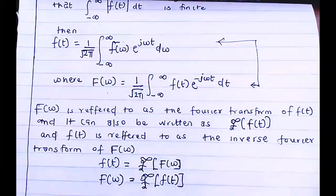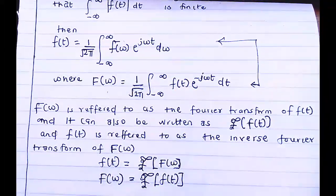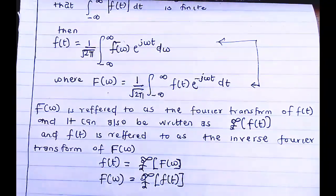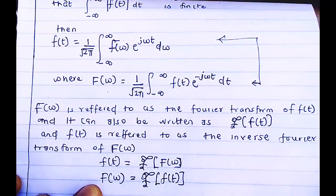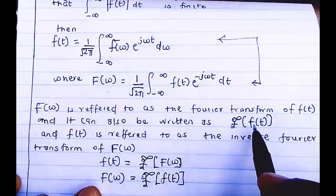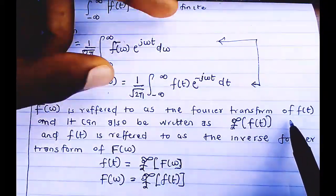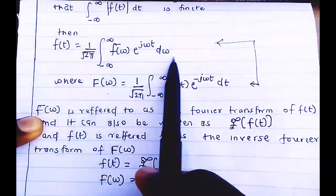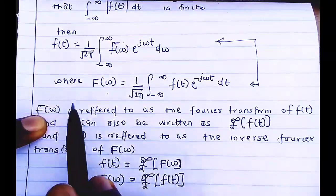These are basically the only two formulas we need for Fourier Transform. This function F(ω) is referred to as the Fourier Transform of f(t). It can also be written using the Fourier Transform notation. Either notation works. Fourier Transform is just trying to calculate an entirely different function from a particular existing function — f(t) is represented as the integral from minus infinity to infinity, and F(ω) is its Fourier Transform.